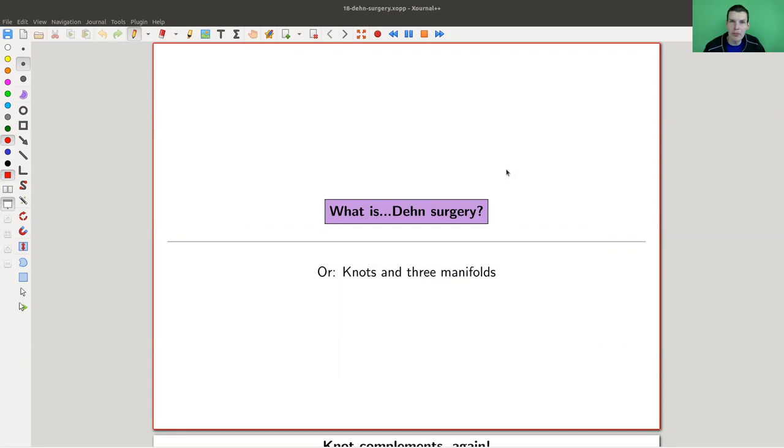Okay, welcome everyone to my continuation of what is geometric topology. Today I would like to discuss a very cool method to produce manifolds, three manifolds, and not just some of them but all of them. And it goes back to Max Dehn and it's called Dehn surgery. So what is Dehn surgery?